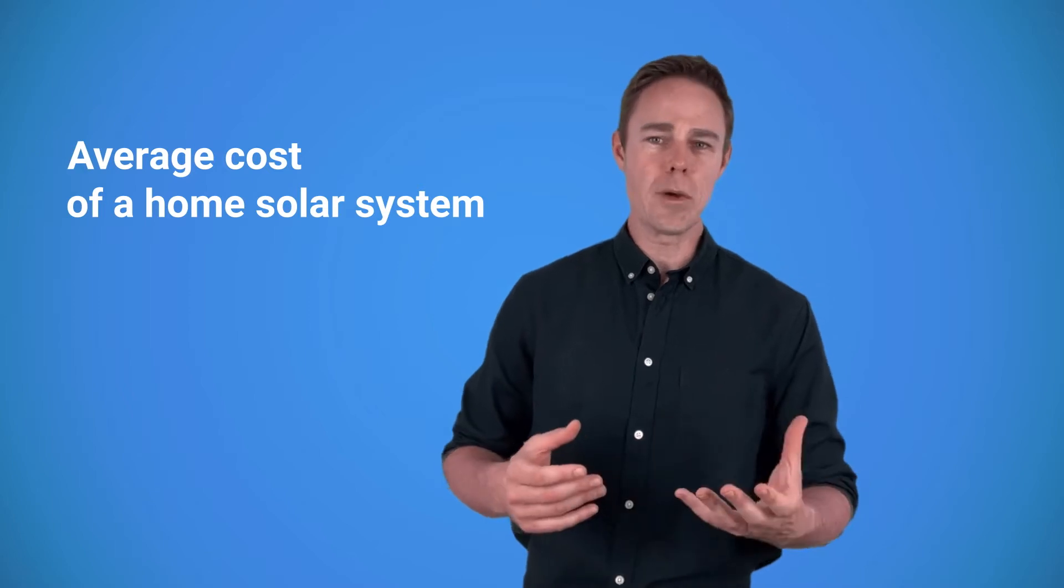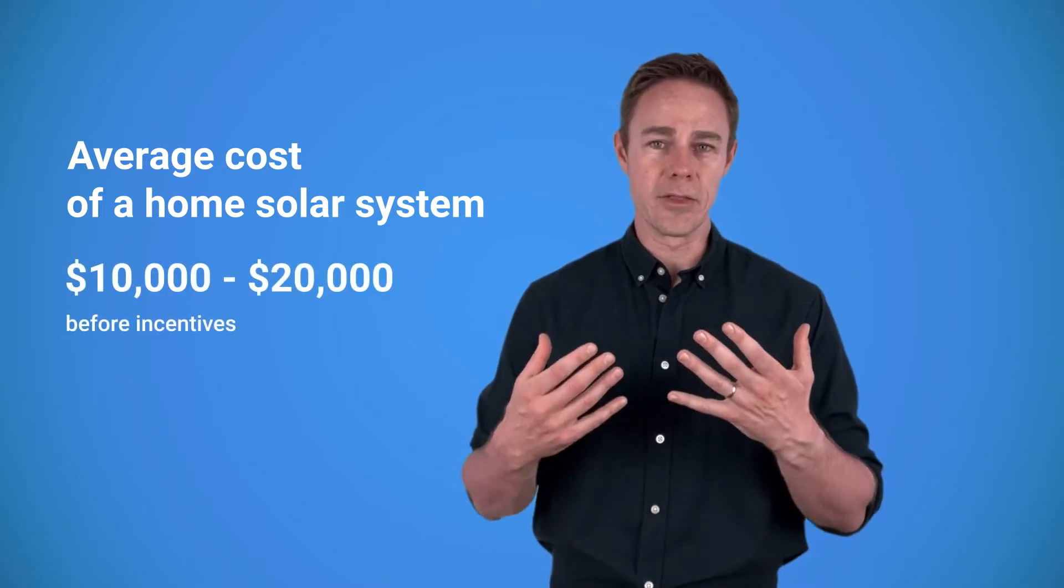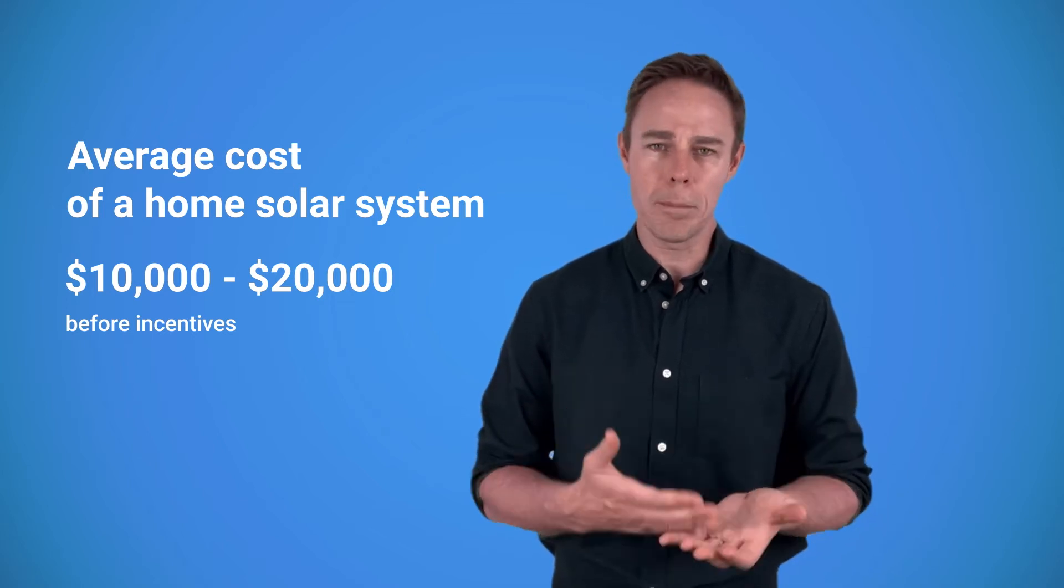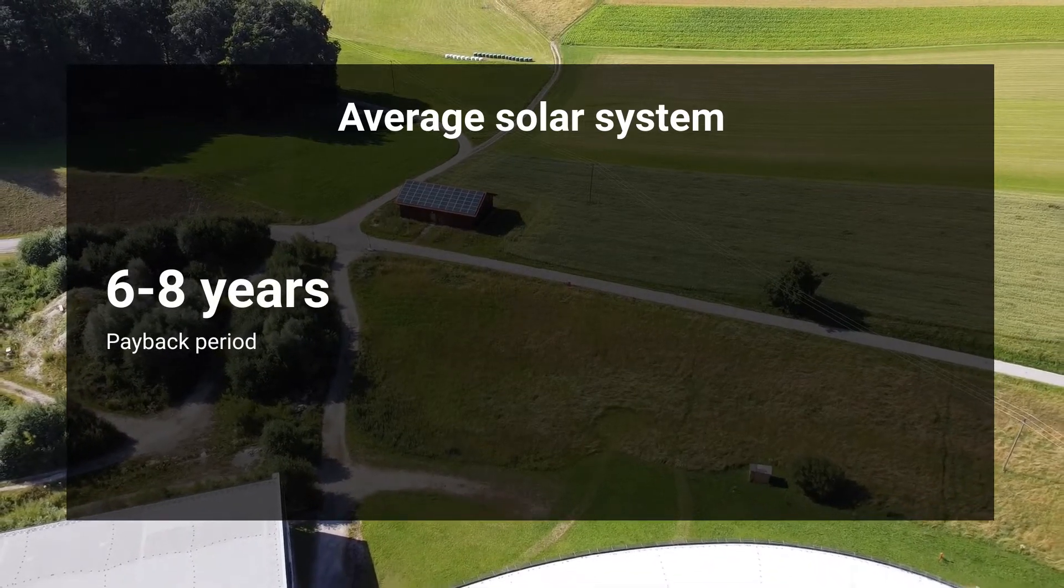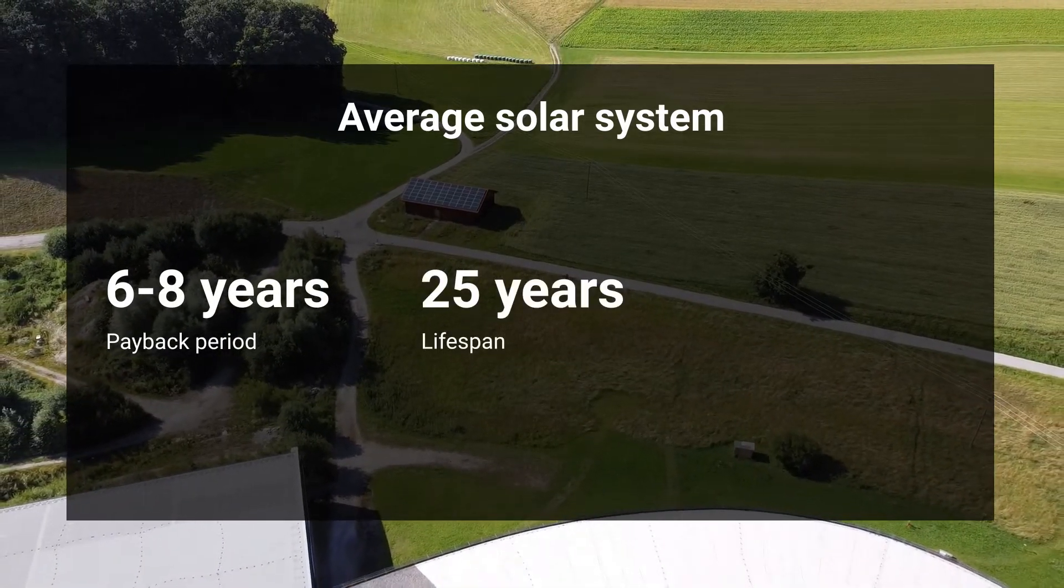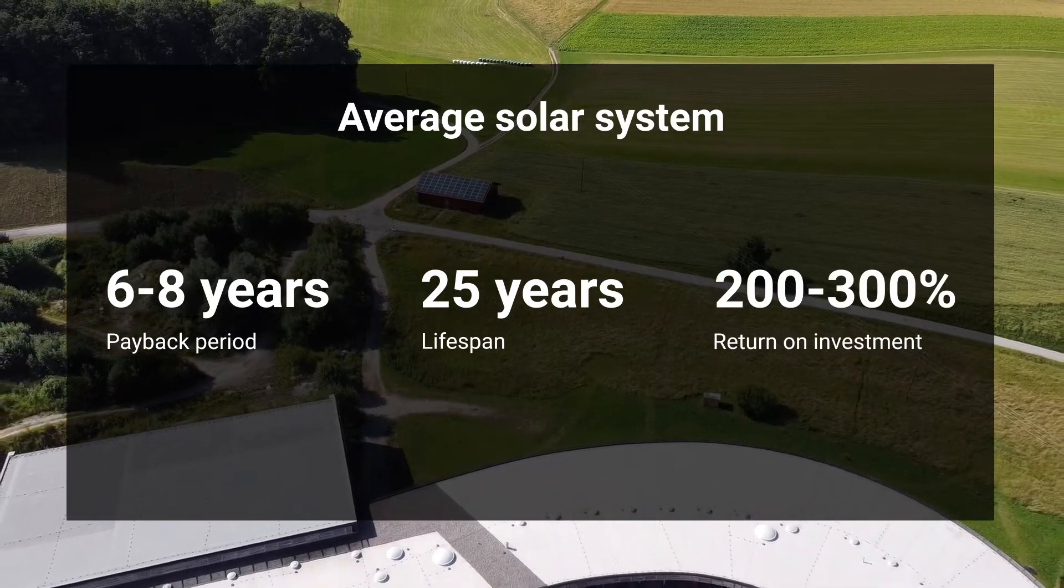An average solar system in the US costs from $10,000 to $20,000 depending on your area, the way you want to set it up, and the equipment that you use. On average, the system pays for itself in about 6 to 8 years. Solar panels last for over 25 years, so you can expect it to pay for itself at least 2 to 3 times during its lifespan.